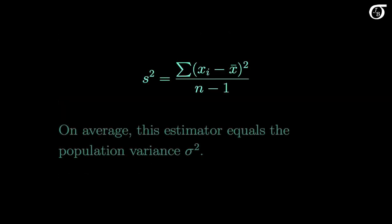To compensate for that, we divide by n-1. This makes the sample variance a little bigger than it would be if we divided by n. It turns out that mathematically this properly compensates for the problem, and on average this estimator equals the population variance sigma squared. It's not obvious why n-1 works — why not divide by n-2 or n-3 or n-0.5? In another video I show mathematically that dividing by n-1 results in an unbiased estimator of the population variance sigma squared.